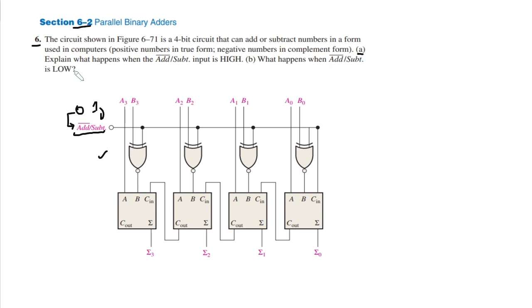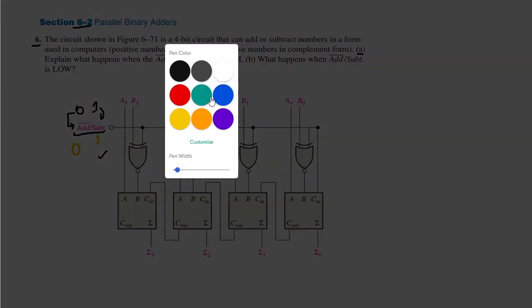In part A we have to explain what happens when the add/complement-subtract input is high, and what happens when it is low. There are two cases: when this control input is 0 it will work as an adder, and if it is 1 it will work as a subtractor.